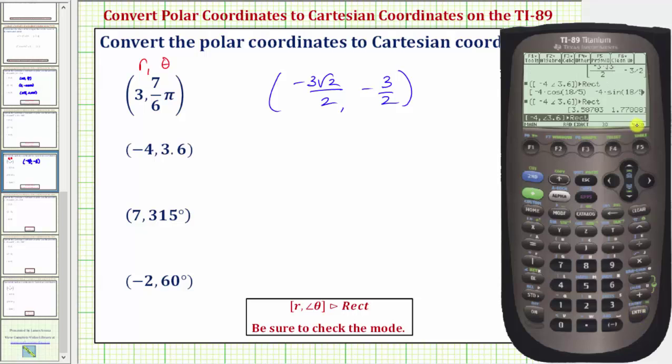Let's use the decimal approximations to four decimal places. So x is approximately three point five eight seven zero, and y is approximately one point seven seven zero one.